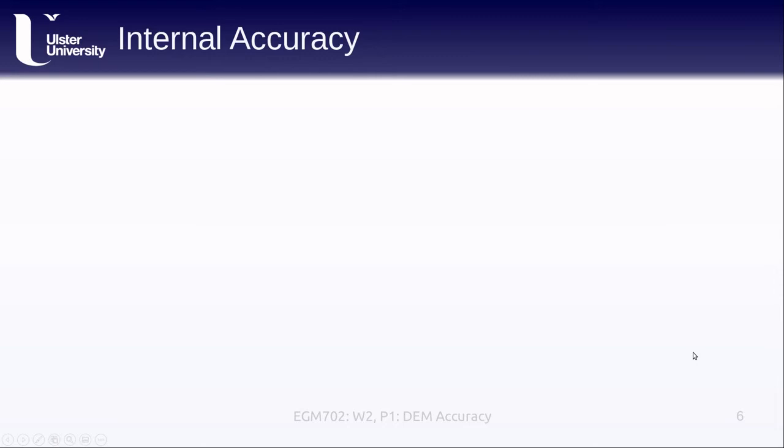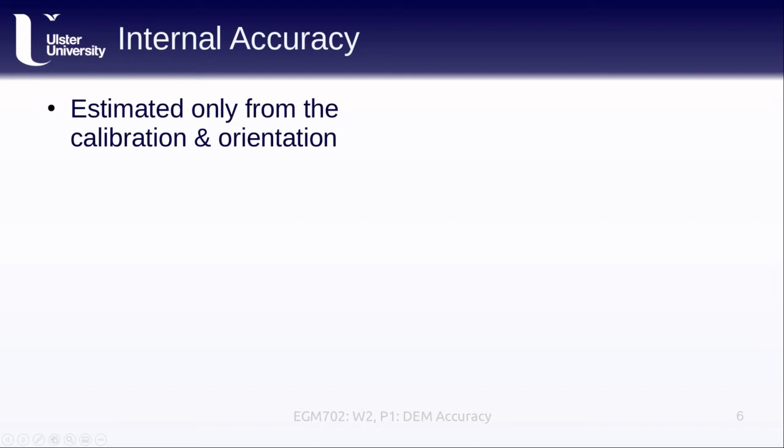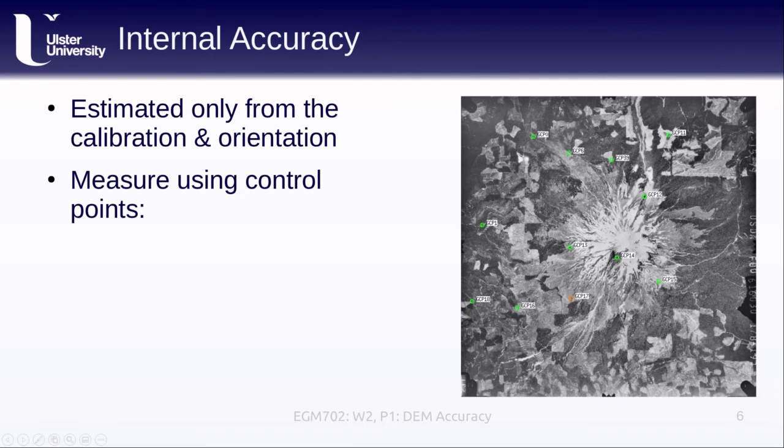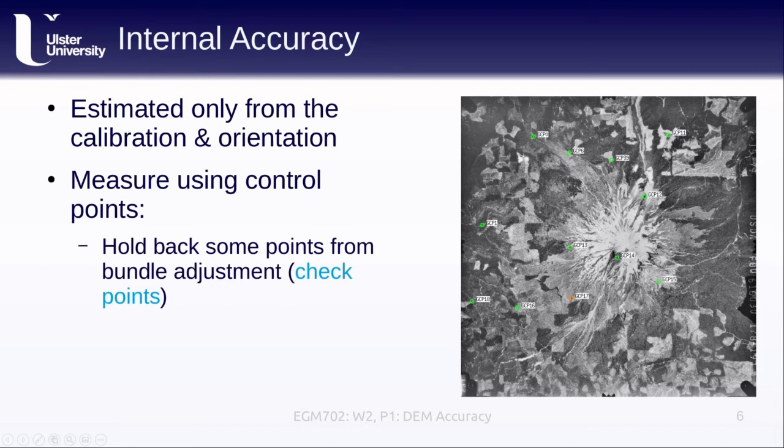To actually measure the accuracy of our DEMs, we have a couple of ways. The first is what's called the internal accuracy, and this is something that we're estimating only from the calibration and the orientation. These are things like, after we've put our control points into our images, we might try to hold back some points from the bundle adjustment, and the result of that would tell us how far away from the expected location this particular ground control point is that you can see denoted by the orange circle here.